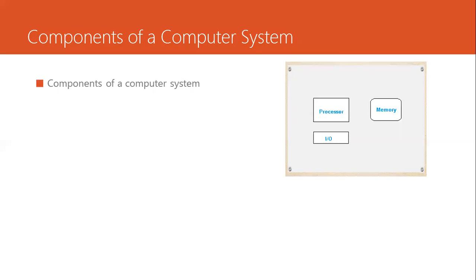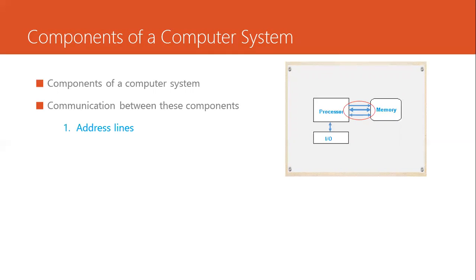The memory is the module responsible for entertaining all these requests from the processor and giving access to data. This communication is performed using buses — a group of signals. We have the address bus, which is unidirectional, going only from processor to memory, used to send the address of the location to be read or written. Whether to read or write is signaled by the control bus. Because sometimes a memory location is not accessible or other issues can occur, the memory must also be able to send error signals to the processor, so the control bus is bidirectional. Then we have the data bus, which is bidirectional, used to read or write to the location specified by the address bus.